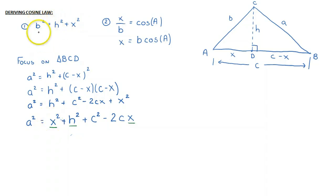Well, I can rearrange equation one and I can say that X squared is equal to B squared minus H squared, which is nice.